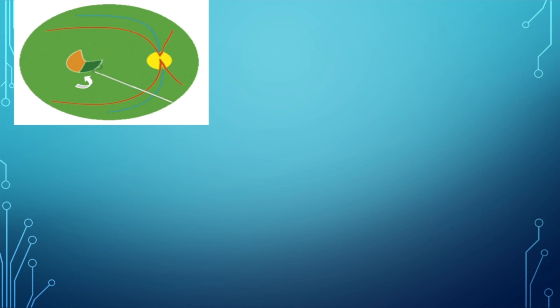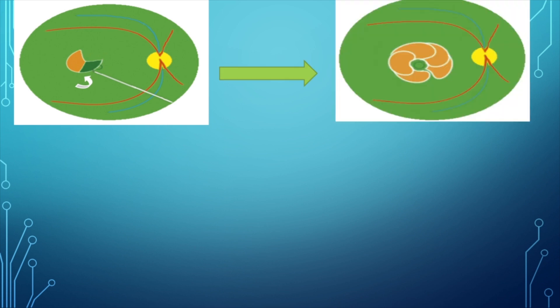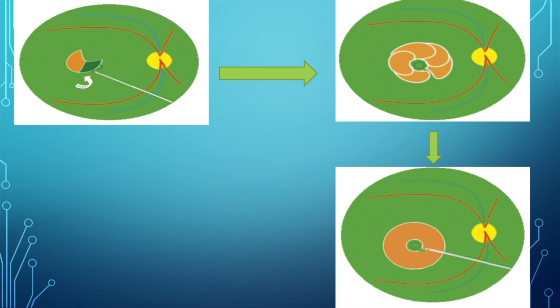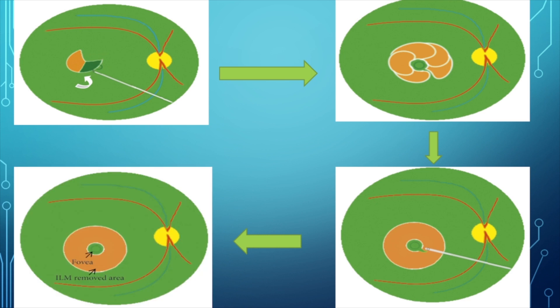The arc-shaped pullback technique described by Zeng et al.: the ILM is torn away from the fovea at the temporal side. The outer edge is grasped by an ILM peeling forceps and moved from the outside toward the paracentral fovea. This maneuver is repeated multiple times until a thin film of ILM is left behind, removed with a cutter, leaving an epifoveal remnant ILM surrounded by the peeled area.